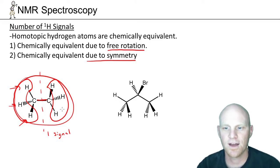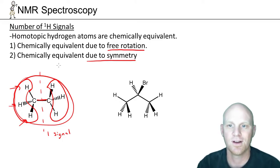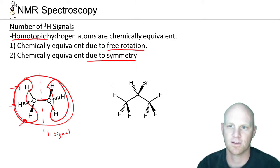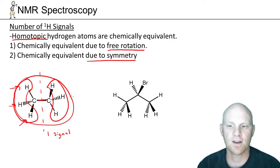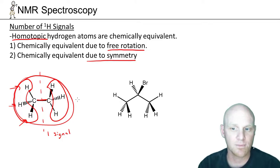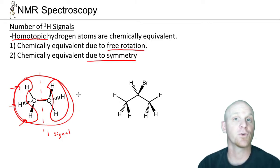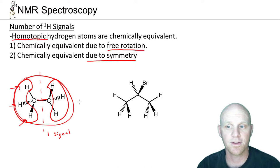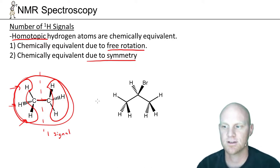These three hydrogens on the same carbon are what we call homotopic. Homotopic hydrogen atoms are chemically equivalent — typically they're bonded to the same atom that can undergo free rotation around the bond, or they're related due to symmetry.